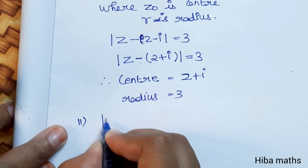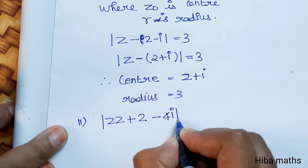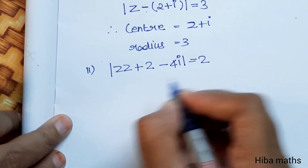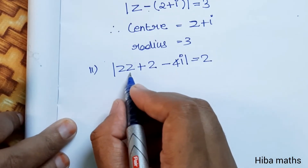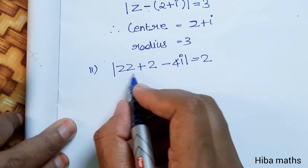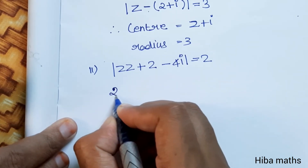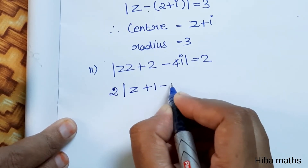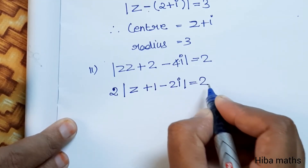Second subdivision: modulus of 2z plus 2 minus 4i is equal to 2. Taking 2 as a common factor inside, we get modulus of z plus 1 minus 2i is equal to 1. This simplifies as 2 divided by 2 is 1.